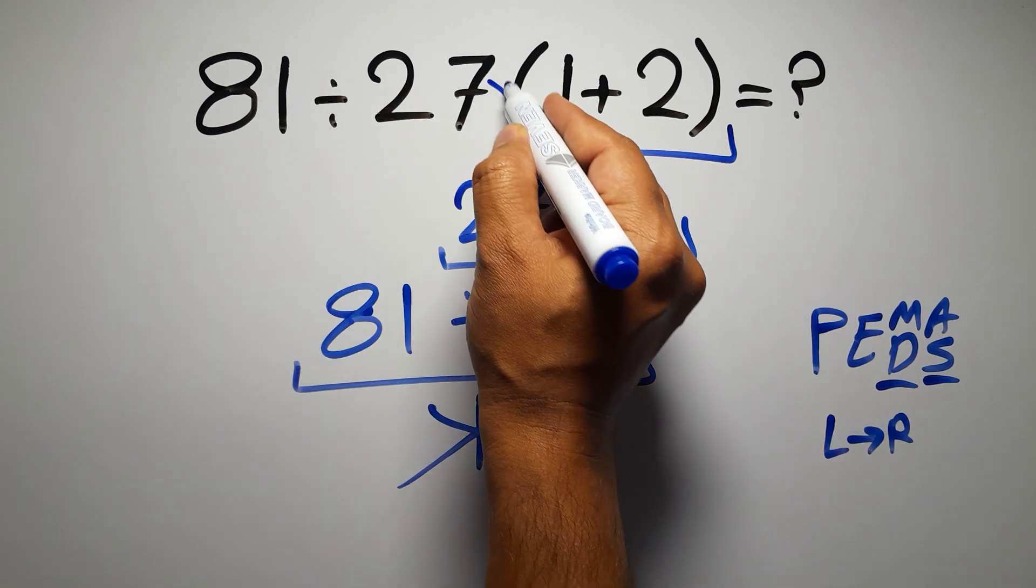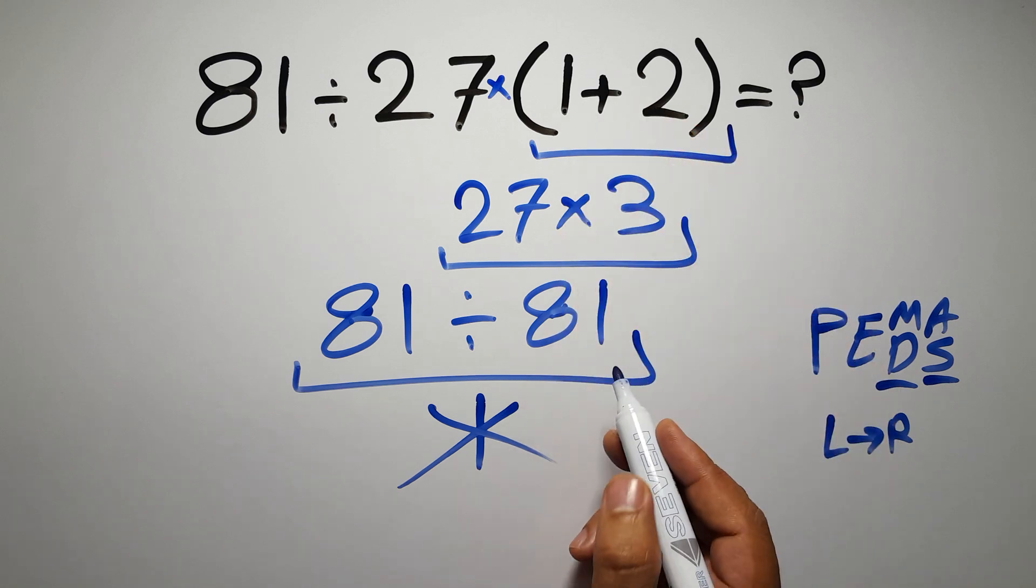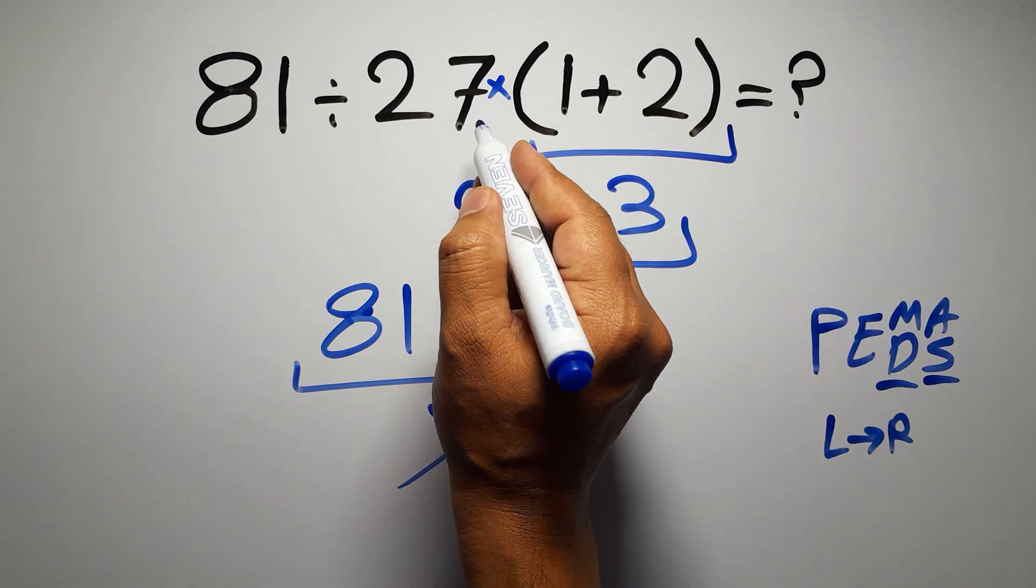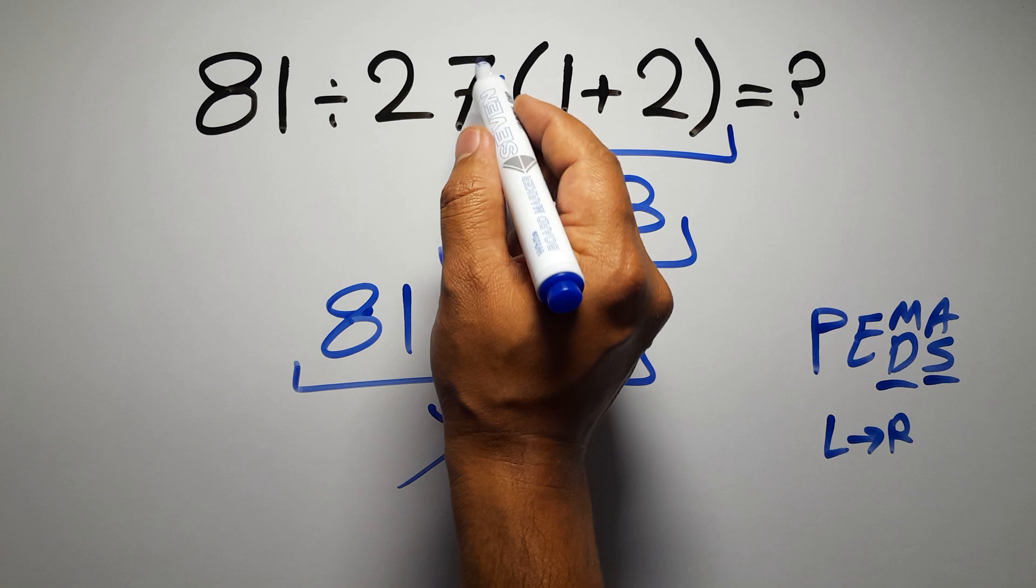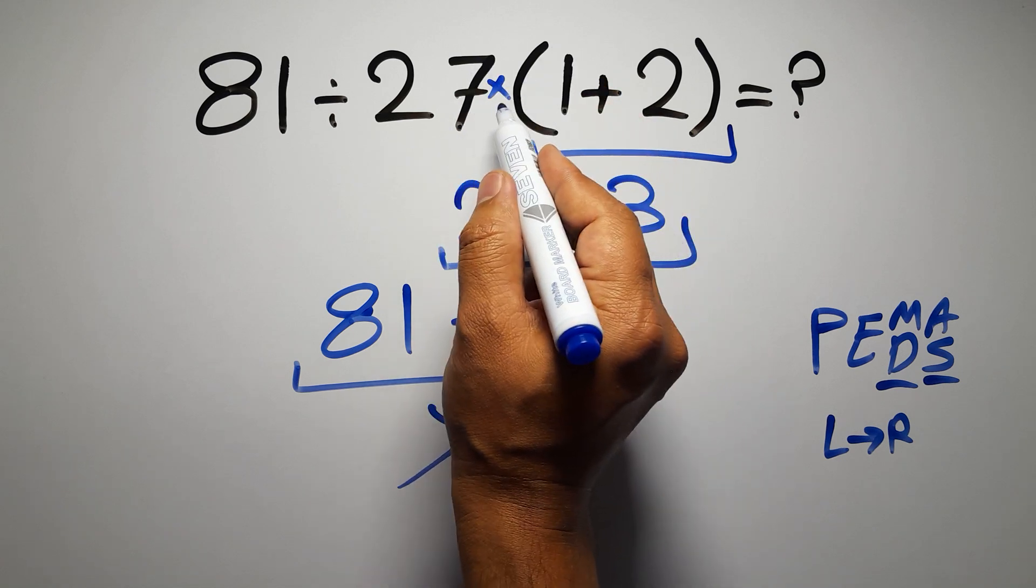In this expression we have one division, one multiplication, and one parentheses. Inside this parentheses we have one addition. Here we have a multiplication because in mathematics when a number is placed next to parentheses it means multiplication and we usually don't write the multiplication sign for brevity.